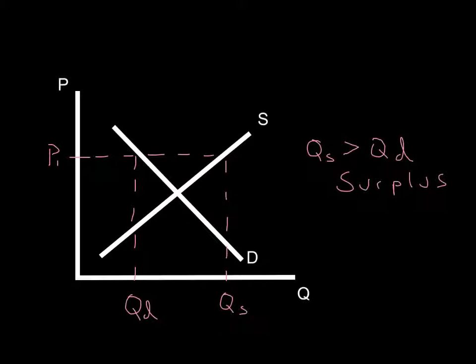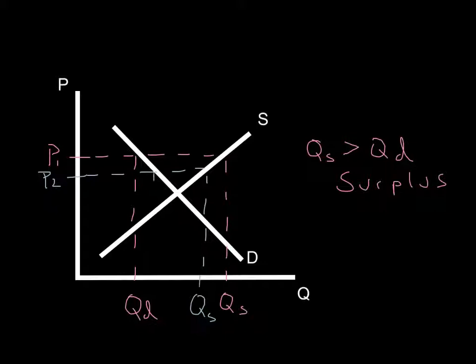When the quantity supplied is greater than the quantity demanded, that's called a surplus. There's a surplus of goods in the market — suppliers are bringing extra units to market that consumers do not want. So what are they going to do to get rid of those extra units? They're going to have to lower their price. So when they lower their price, say to P2, we bring that across with a horizontal line, hit the supply curve and come down — that's the new quantity supplied. Following P2 over to the demand curve and coming down gives the new quantity demanded.